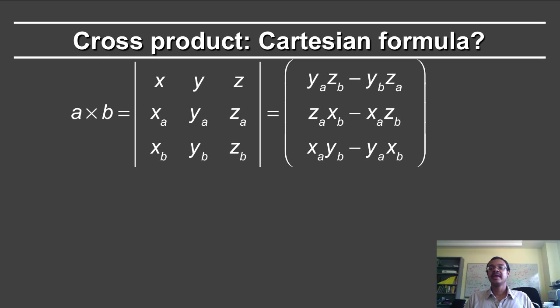So A cross B is written in this way in terms of a determinant. So in the determinant, the first value x involves yA, zB minus zA, yB. So yA, zB minus yB, zA. The next value y involves zA, xB minus xA, zB. zA, xB minus xA, zB.